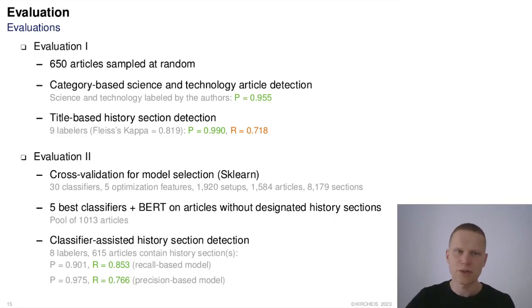We then applied the five most promising classifiers and BERT to the articles without designated history sections, ending up with a pool of more than 1,000 articles. Labelling tells us that 615 of these do contain a history section, and that using a classifier-assisted approach can increase recall by almost 15% when using a recall-based model, or 5% when using a precision-focused classifier.